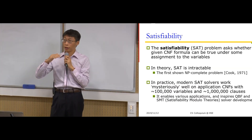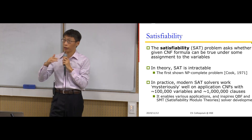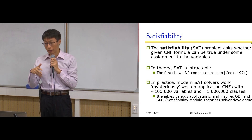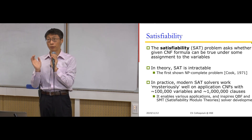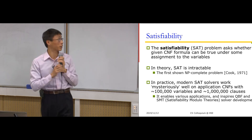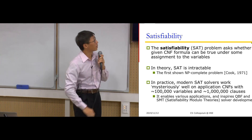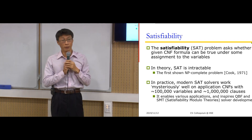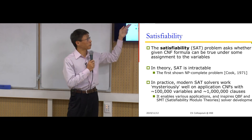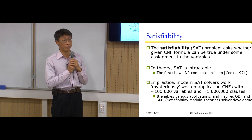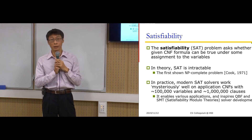Now we know that given a Boolean function represented as a circuit, we have a way to convert it to CNF. SAT is intractable and was the first NP-complete problem to be proved. Yet in practice, modern SAT solvers can somehow solve very large CNF problems in industry — for example, hundreds of thousands of Boolean variables with millions of clauses — typically determining satisfiability in a few minutes.